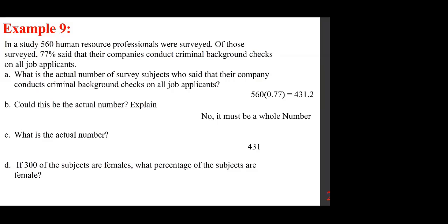If 300 of the 560 subjects are female, what is their percentage? You divide 300 by the original sample size of 560 — not by 431. The 431 refers only to the number corresponding to the 77% who said they conduct background checks.